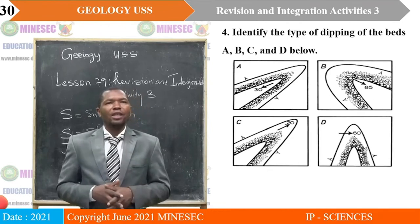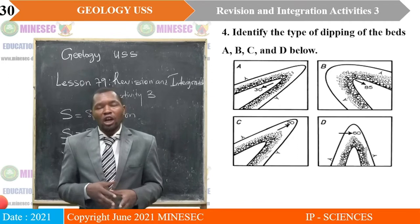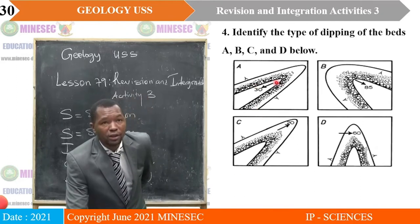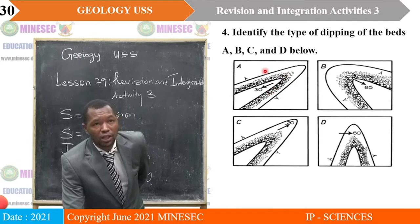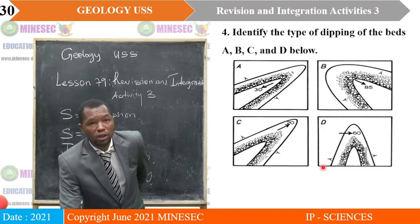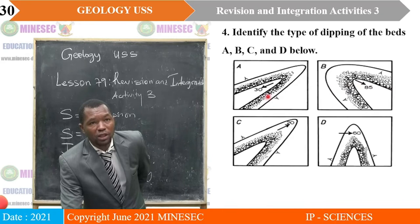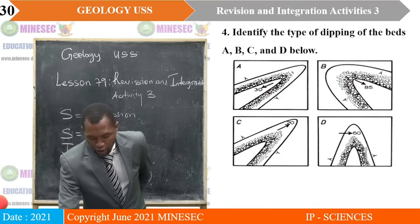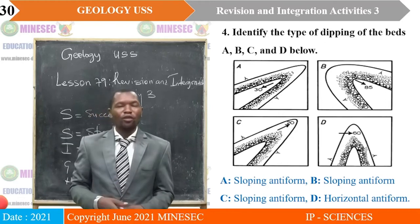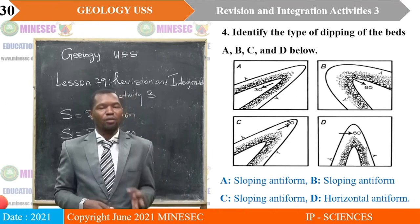Identify the type of dipping of the beds A, B, C, and D. For bed A, looking at the dip and the direction of the beds — the dips are away on each side. Case A is a sloping antiform, B is a sloping antiform, C is a sloping antiform, and D is a horizontal antiform. Look at the way this arrow is pointing for D.